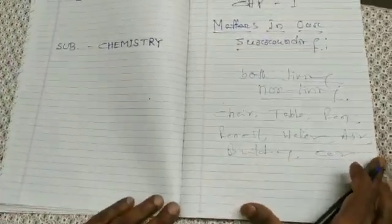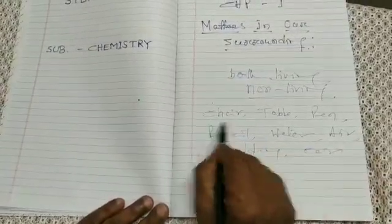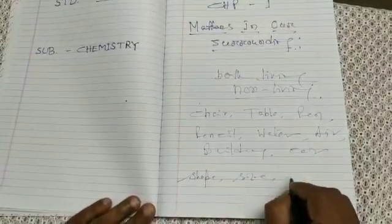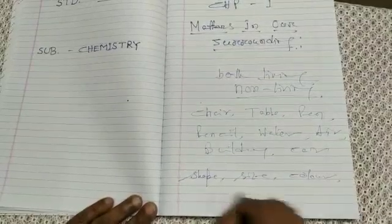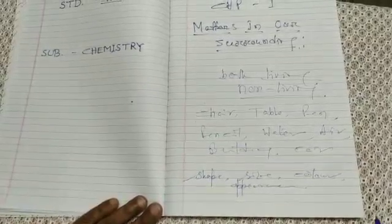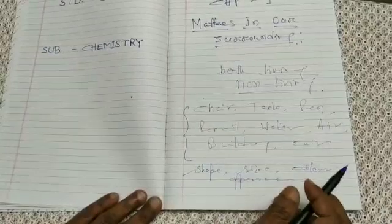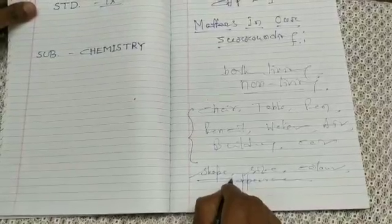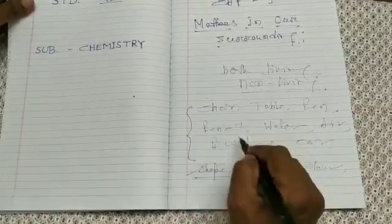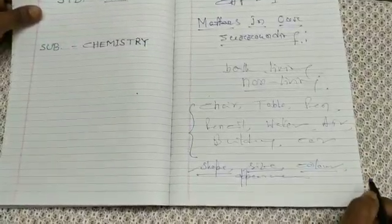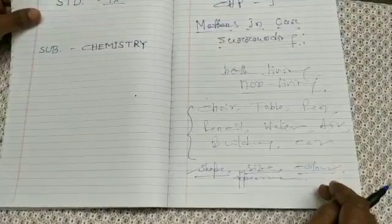Now just look — all of these differ in their shape, they differ in size, they differ in color, they differ in appearance. Then is there any common thing? In terms of shape, they have different shapes. In terms of size, they have different sizes. In terms of color, they have different colors. So what is common among them?